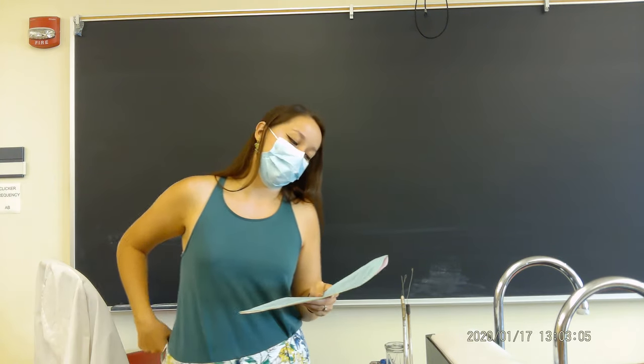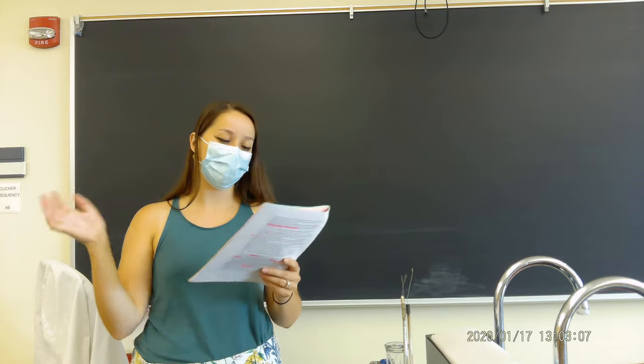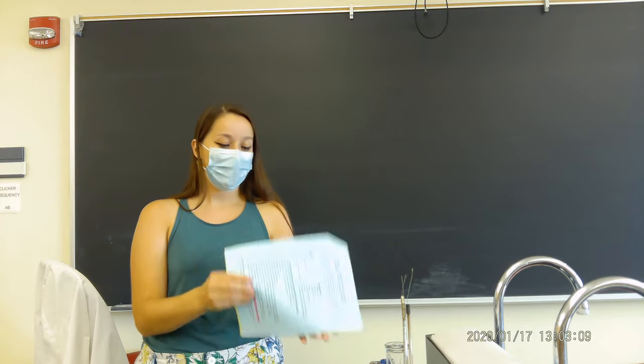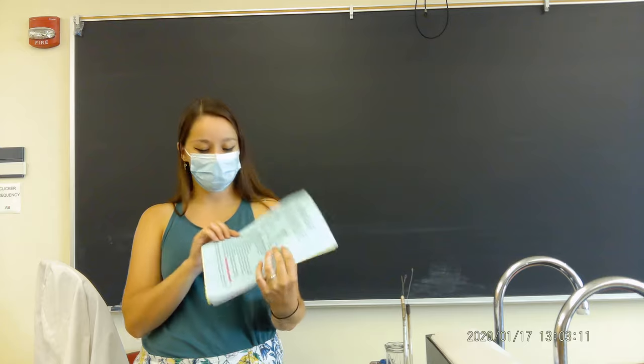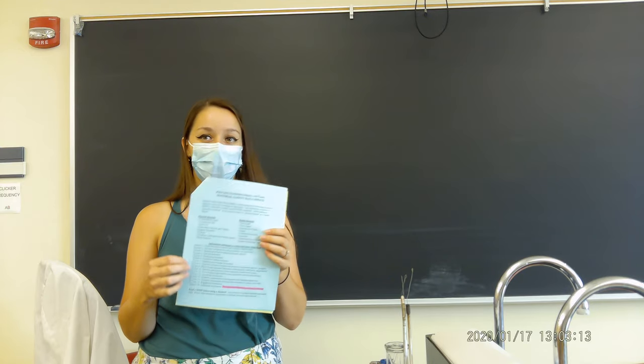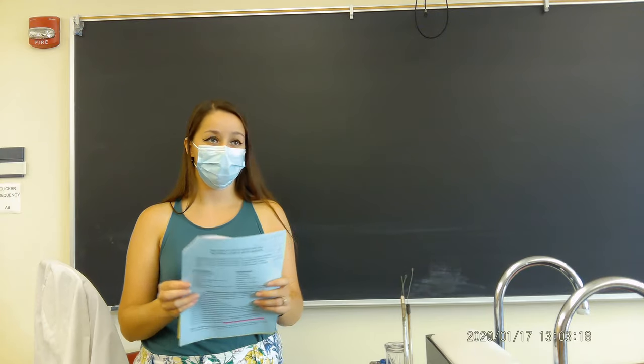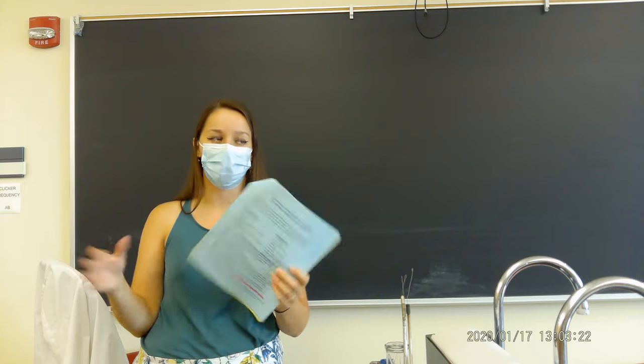So when you look at a safety data sheet you're going to see things like physical hazards, health hazards, and every single safety data sheet is going to have these 16 sections. And sometimes things are a little mixed up in the different sections but they're always going to have these 16 sections and they should be titled about the same.